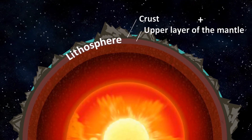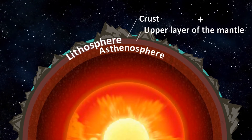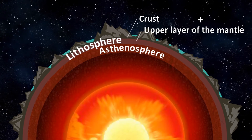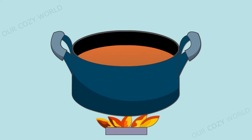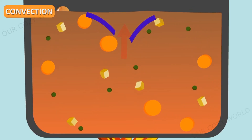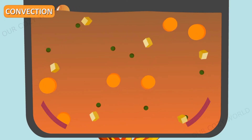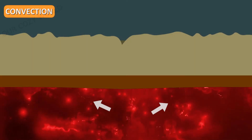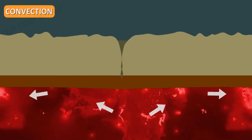Why is the asthenosphere fluid? Because powerful forces are at work in the bowels of the Earth causing thermal convection in the mantle. Like a pot of soup heated from below — the soup heats up and rises, whereas on the surface it cools down and settles down again. A similar process governs the mantle, and it goes on continuously.